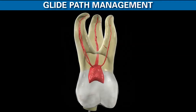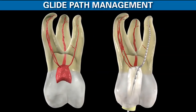Many colleagues use a viscous chelator like Glide, ProLub, or RC Prep and tediously work the 10 file. Often it won't go, so they'll drop to an 8, or even a 6, to reach length. Many times when we do this, we need to appreciate a lot is happening beyond simply negotiating the canal. The rate of taper of the file is more or less the rate of taper of the canal, there's virtually no irrigant in the system, the file generates debris that frequently gets pushed into the lateral anatomy, and we have to wonder whether we can truly pre-curve a stainless steel file and pass it through canyons of restrictive dentin.